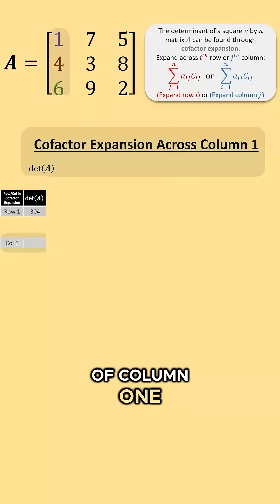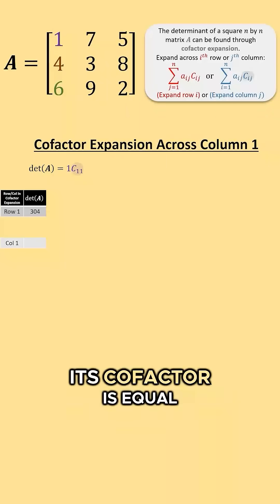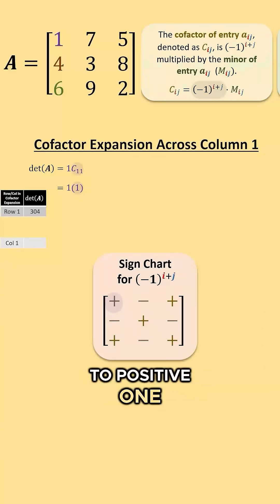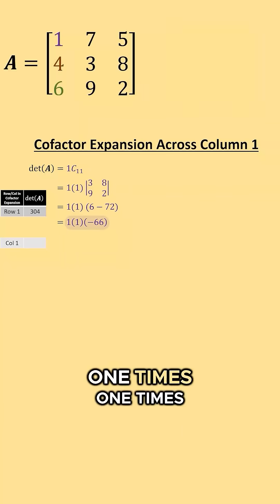The first entry of column 1 is 1 and we multiply it by its corresponding cofactor. Its cofactor is equal to positive 1, this position in the sign chart, times its minor which is equal to negative 66. 1 times 1 times negative 66 is negative 66.